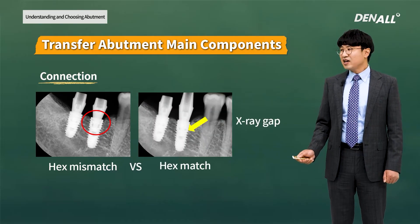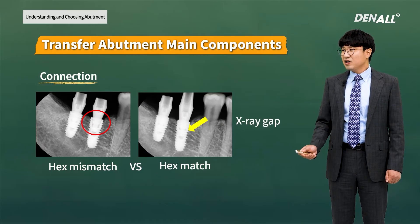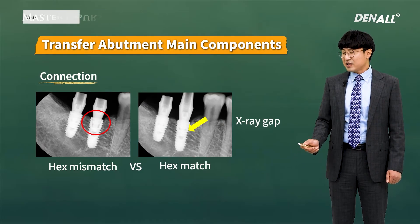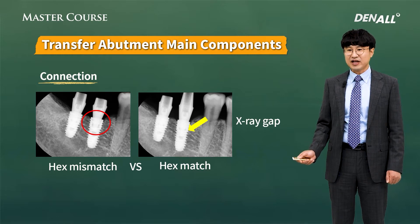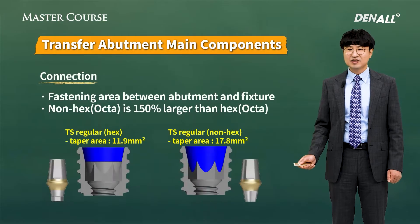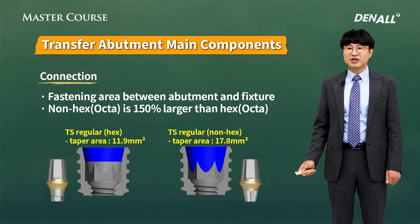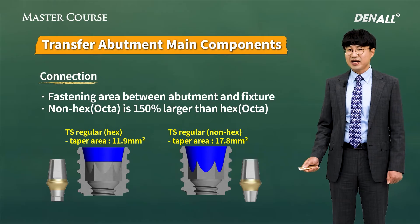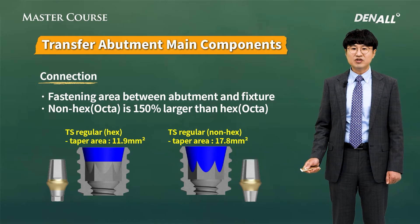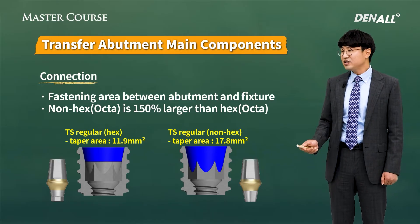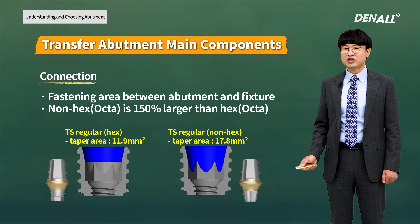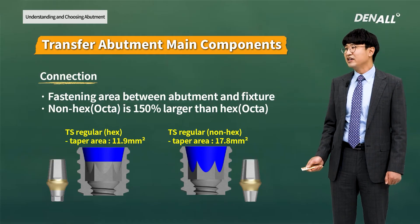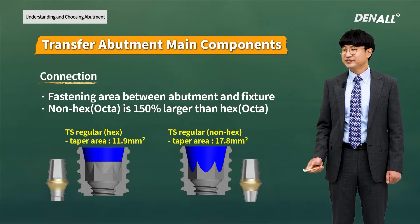The right x-ray shows a proper hex connection. As the first abutment hex was not connected properly, with another stock abutment the hex is properly connected again. For non-hex, there are positioning difficulties, but almost no chance of making a hex mismatch — which is the biggest advantage. There is less room for making a mistake, and it has a higher contact area with the fixture, so the lifespan is longer according to research results.